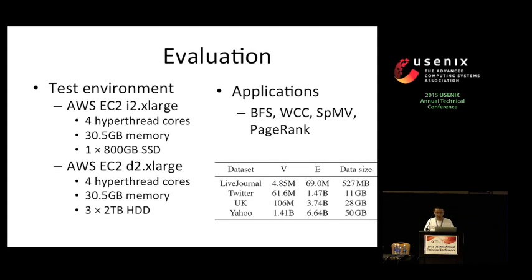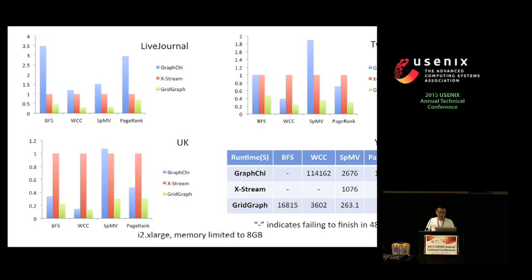Then I will show some evaluation results. We conduct our experiments on EC2, I2.XLarge and D2.XLarge instances. We use four applications and four real-world graphs to evaluate the performance. This slide shows the performance compared with GraphChi and X-Stream, two state-of-the-art out-of-core graph processing systems. We limit the available memory to eight gigabytes to illustrate their out-of-core performance. These charts show the relative runtimes of different applications using different systems on different datasets. For the Yahoo graph, since some applications take too long to finish on GraphChi and X-Stream, we only give the absolute runtime table instead. We can see that GridGraph is often two to three times faster, and for very large graphs like Yahoo, the performance gap can be even bigger.